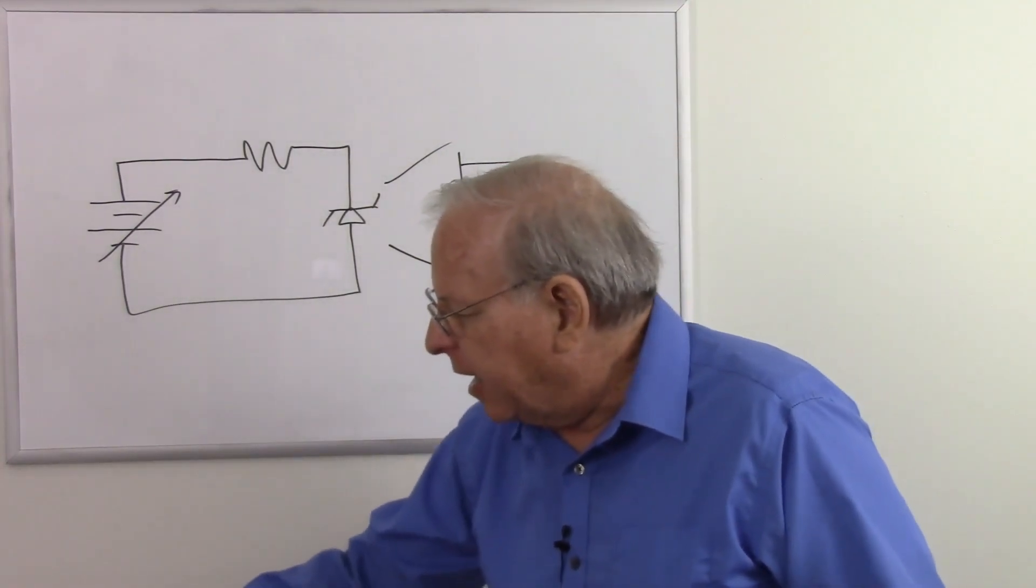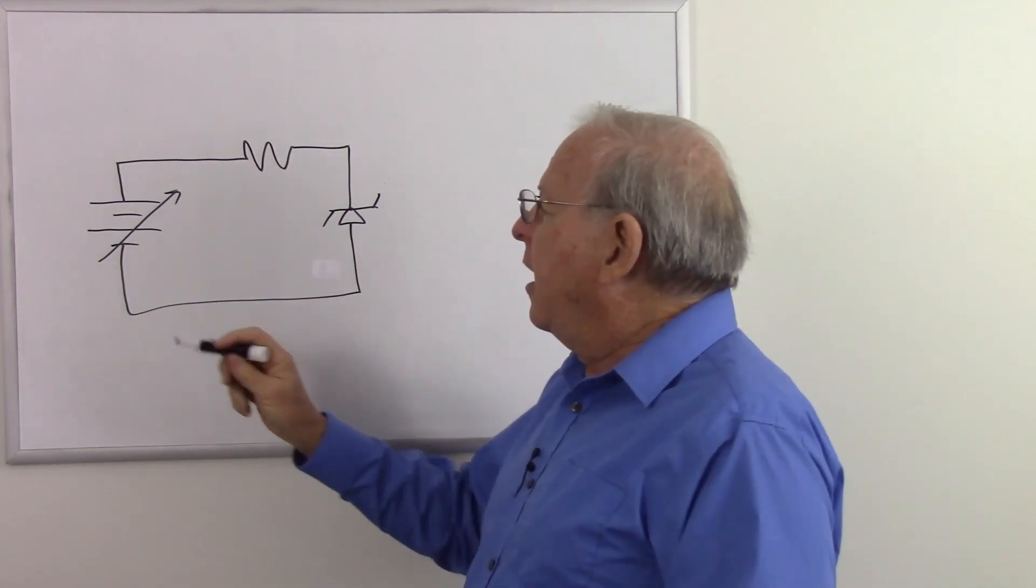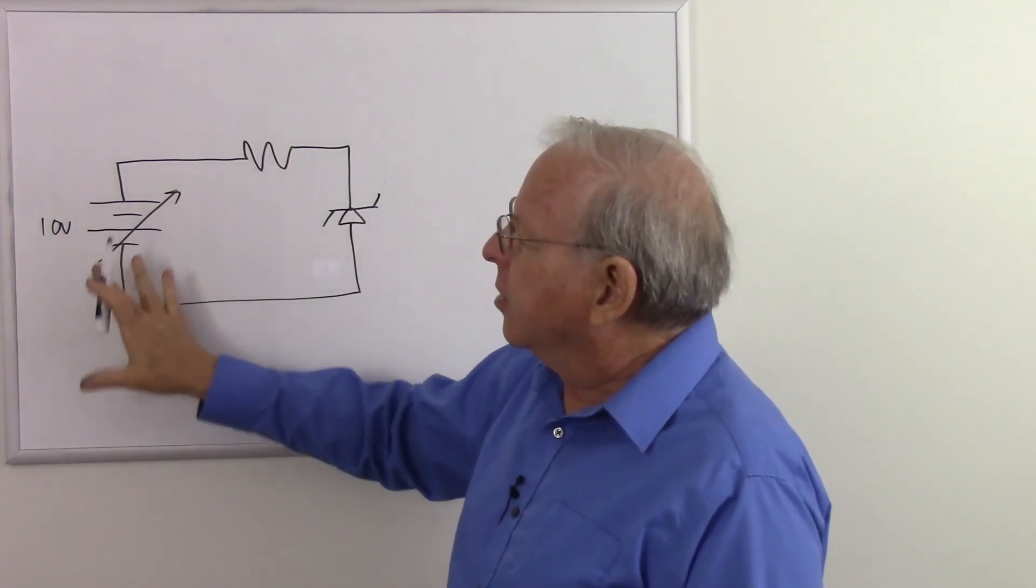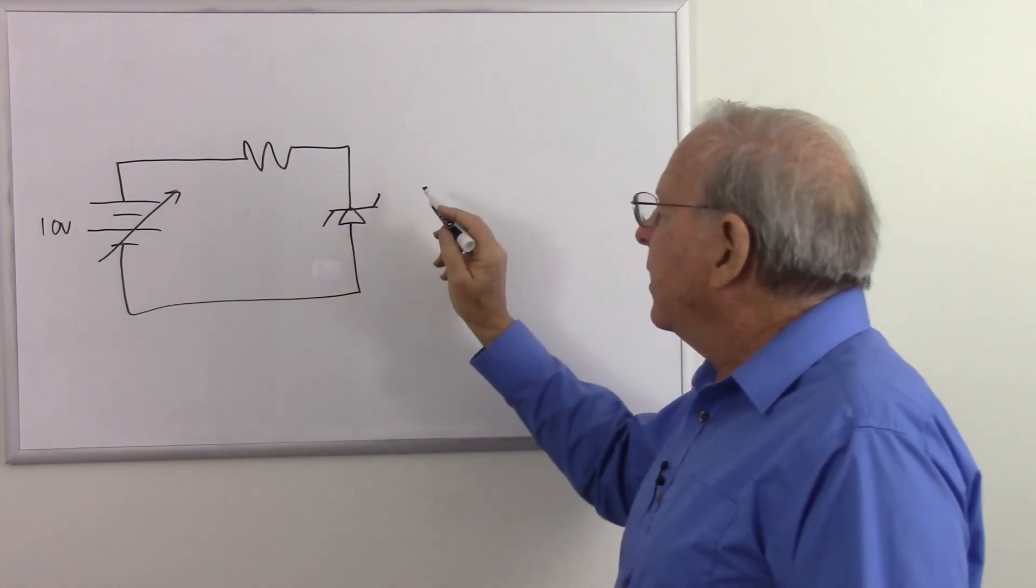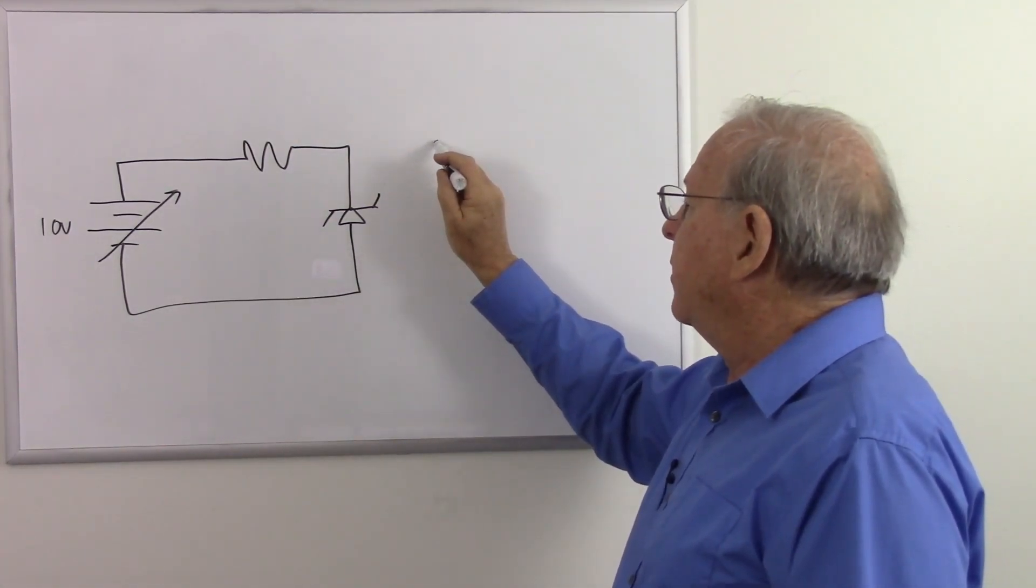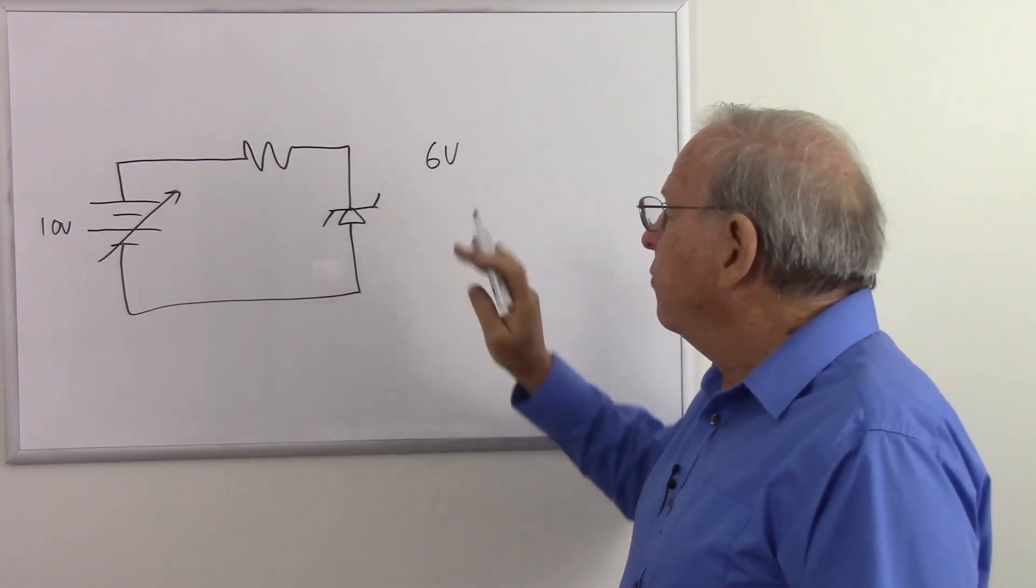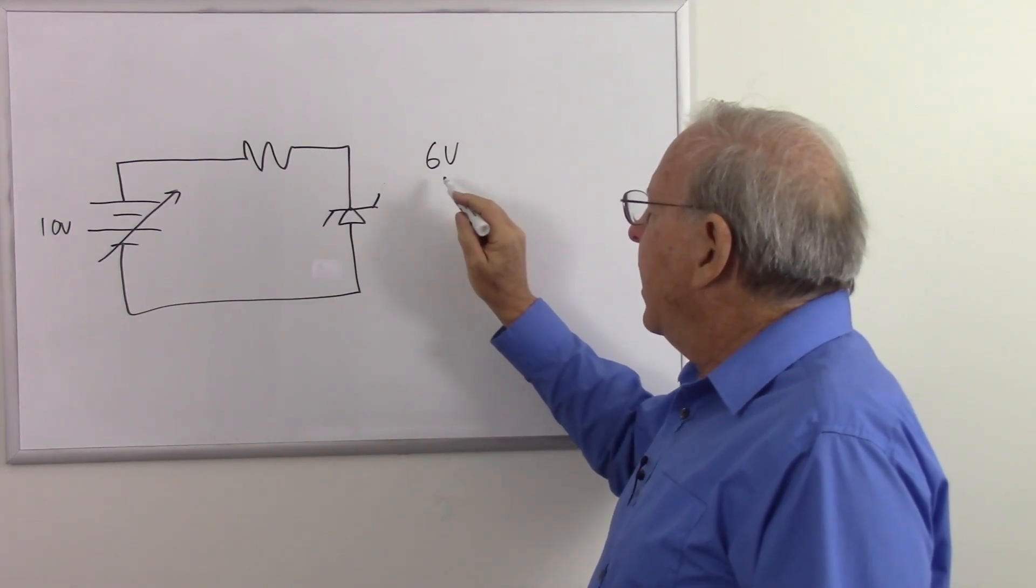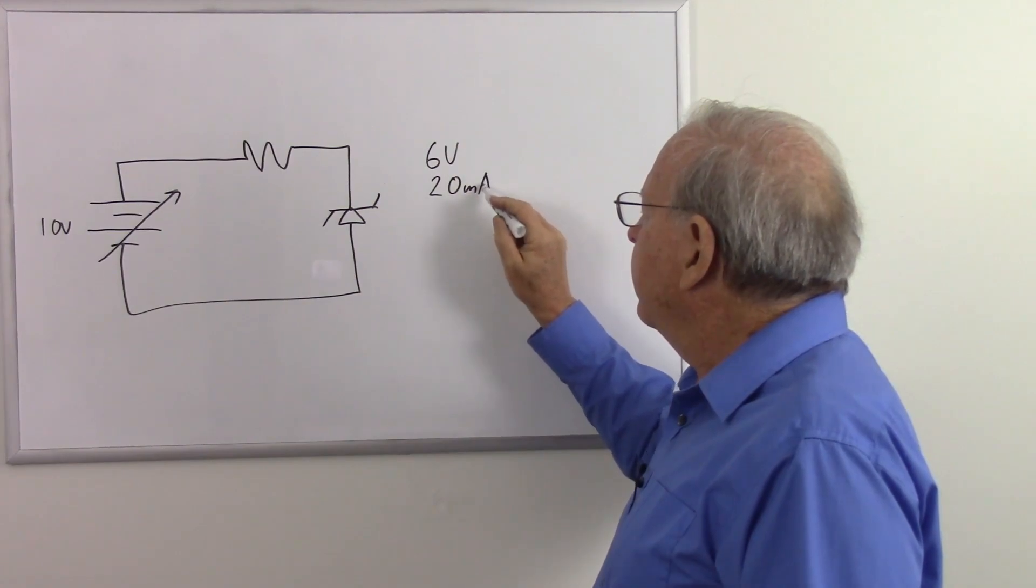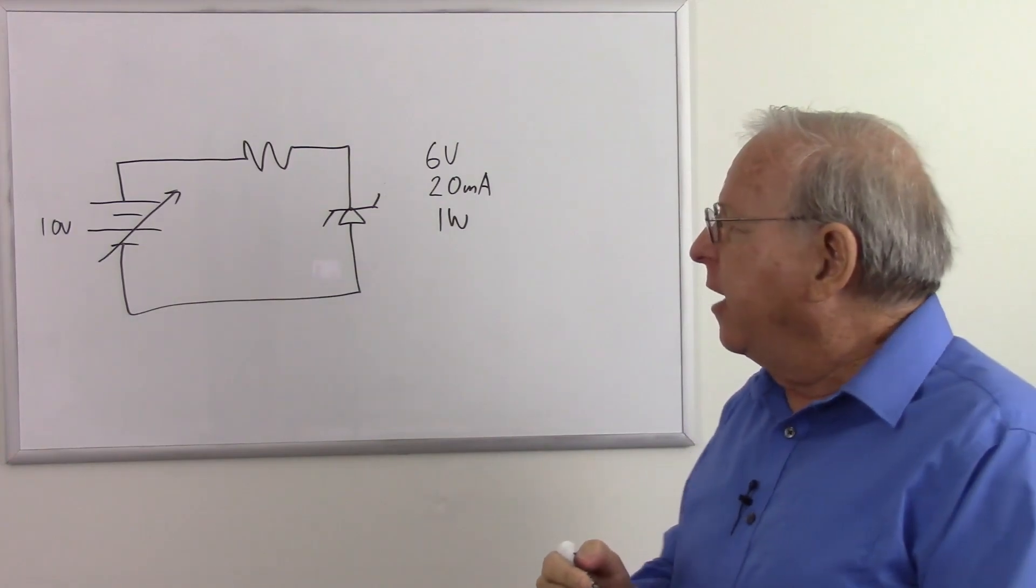So let's see how that works. Let's get the clutter out of the way here. So let's say that this is a 10 volt battery. It's variable so it can go up and down. And let's say that this particular diode, we look at its specs and it's rated at 6 volts. So it's going to change its resistance to whatever it takes to hold that voltage at 6 volts. It works best at 20 milliamps and it can dissipate 1 watt.